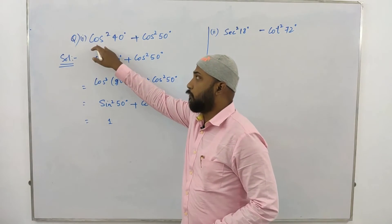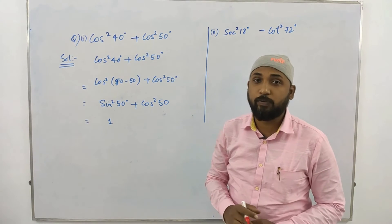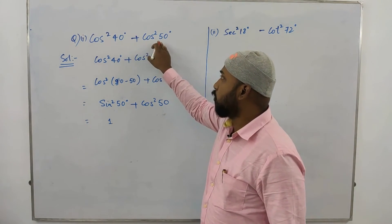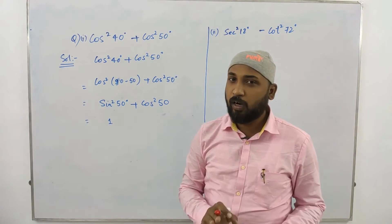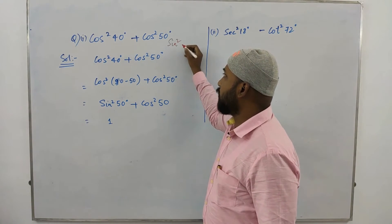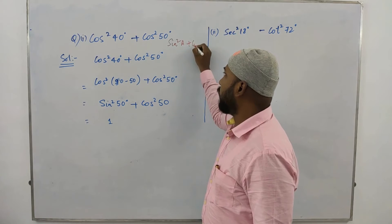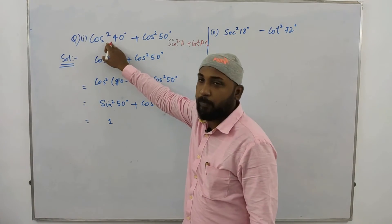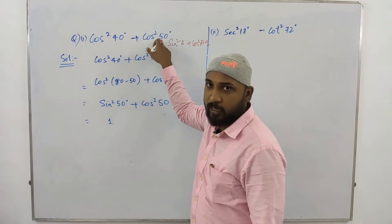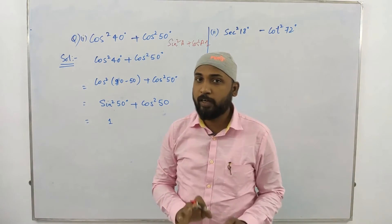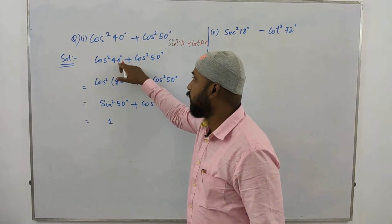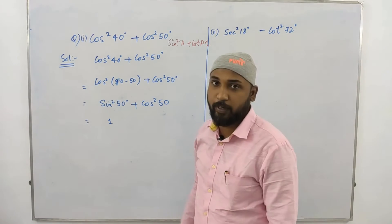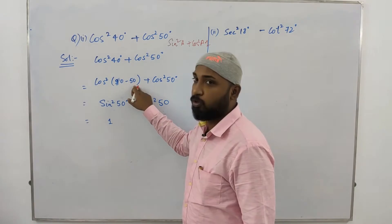In this question we have cos²40 + cos²50 and need to evaluate it. We recall the formula sin²a + cos²a = 1. If we convert cos²40 by writing 40 as 90 minus 50, then cos²(90 − 50) equals sin²50. So the expression becomes sin²50 + cos²50, which equals 1.